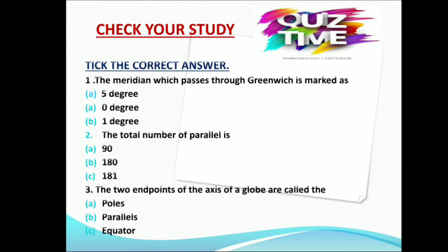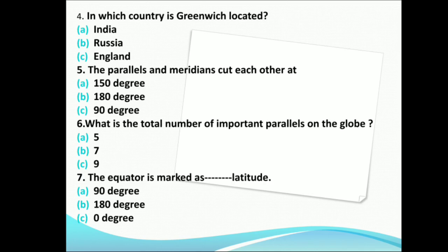Check your study. Pick the correct answer. The meridian which passes through Greenwich is marked as 0 degrees. The total number of parallels is 181. The two end points of the axis of a globe are called the poles. Greenwich is located in England. The parallels and meridians cut each other at 90 degrees.